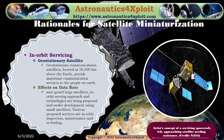In-orbit servicing is another reason for satellite miniaturization. Geostationary communication satellites located at 36,000 kilometers above the Earth provide important communication services to people on Earth. In order to safeguard large satellites, in-orbit servicing approaches and technologies are being proposed and developed using small satellites. Various proposed services are in-orbit inspection, maintenance, and refueling. This picture shows an artist's concept of a servicing spacecraft, on the left, approaching a satellite needing assistance.